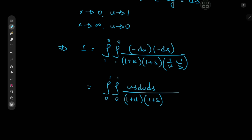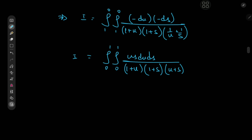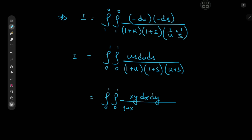We have us duds up top, divided by (1 + u)(1 + s)(u + s). Just for further convenience, because we can rename the dummy variable to anything we like, I'd like to rename them back to x and y. So we have the double integral from 0 to 1 of xy dxdy divided by (1 + x)(x + y)(1 + y).